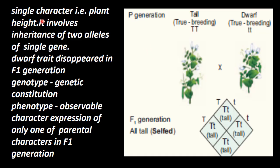Now, this is a true breed — alleles are homozygous. This is also a true breed — alleles are homozygous. The two true-breeding cross approach is called a hybrid. It is a monohybrid, involving a single character — that is, plant height.